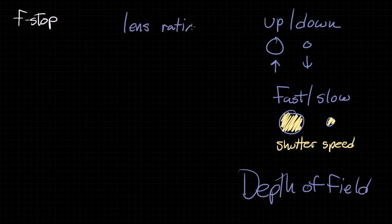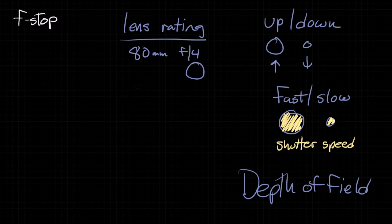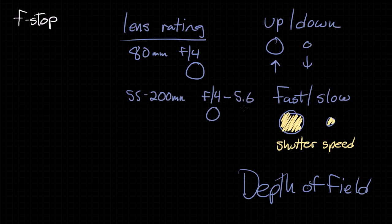Then we have lens ratings. In lens ratings, you'll often see the maximum aperture size listed. For instance, you might have an 80mm lens with f/4 as its maximum aperture size. Or you might see something like a 55mm to 200mm lens where the focal length can vary, but at the shorter focal length you might have an aperture size of f/4, and at the longer focal length you'd have an aperture size of f/5.6. This is due to the construction of the lens, which only allows a certain maximum aperture at differing focal lengths.